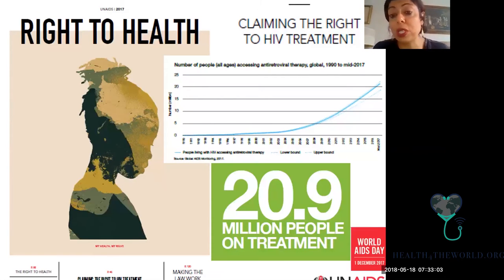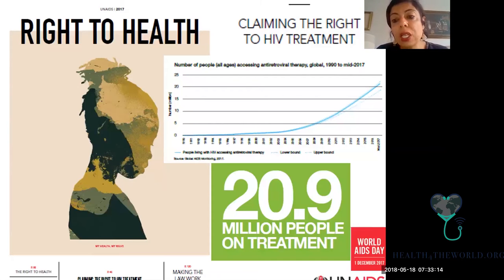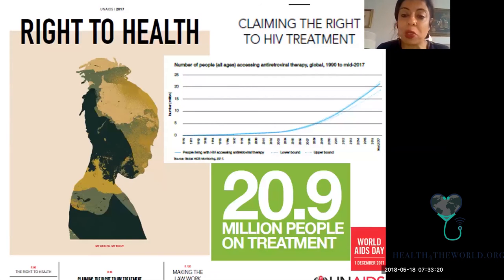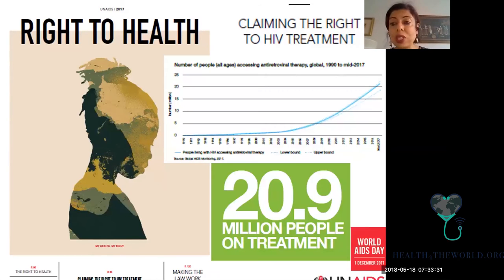A report was released by UNAIDS on World AIDS Day, December 1st, 2017, that 20.9 million people worldwide are on treatment. That is good — it's better than at any time in history. Unfortunately, it's not 36.7 million people. So we have not reached where we need to be, which is everyone in the world having access and getting antiretroviral therapy, which enables HIV to be managed as a chronic illness and prevents deadly opportunistic infections.